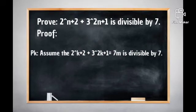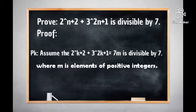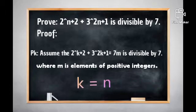The next step is to assume that 2 to the power of k+2 plus 3 to the power of 2k+1 is equal to 7m, meaning it is divisible by 7, where m is an element of the positive integers. We simply substitute the letter k for n.